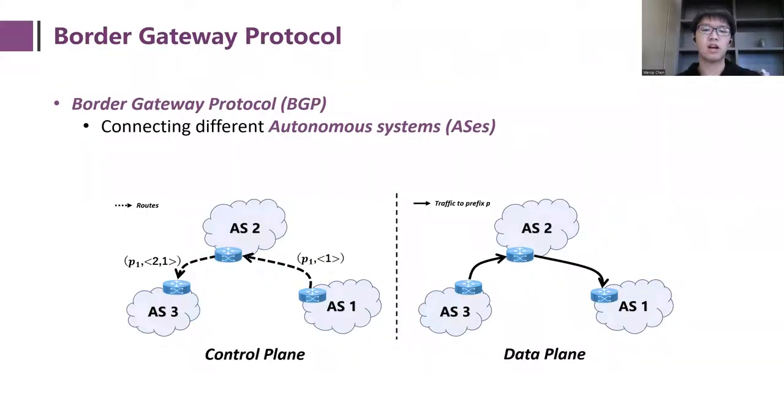Let's start with the introduction of BGP. As we know, the Internet is composed of thousands of smaller self-operative networks, named autonomous systems, or abbreviated as ASes. And the Border Gateway Protocol, also known as BGP, is the protocol that connects these ASes.